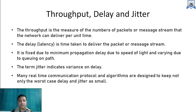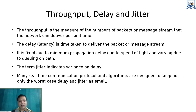The quality of service terms are throughput, delay, and jitter. Throughput is the measure of the number of packets or message streams the network can deliver per unit time. Delay, also called latency, is the time taken to deliver a packet or message stream. There are three kinds of delay: the outgoing queue at the sender, the transmission link, and the receiver queue. Delay is fixed due to minimum propagation delay (speed of light) and varies due to queuing along the path.